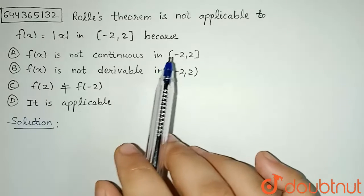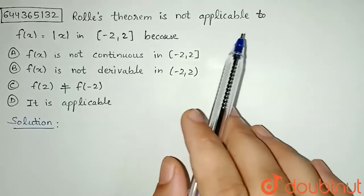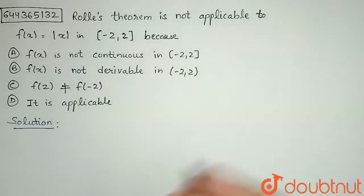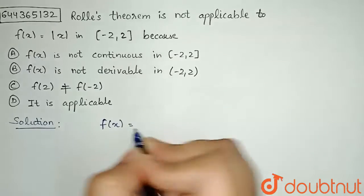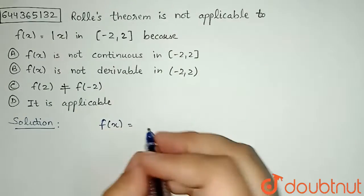Here in this question, we need to find that why Rolle's theorem will not be applicable to this function. First of all, let's see what my function is. We are given f(x) equal to mod x and interval is what minus 2 to 2.